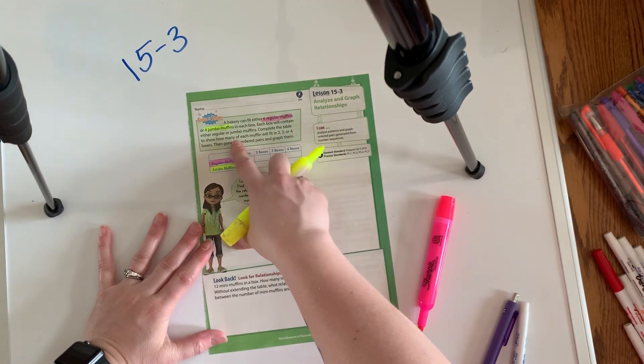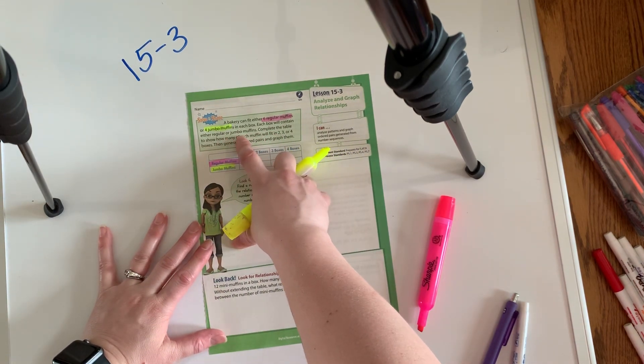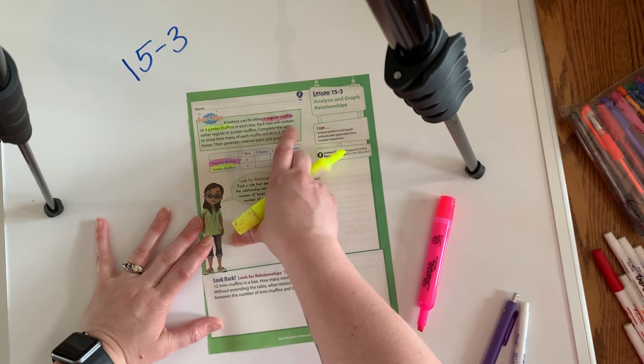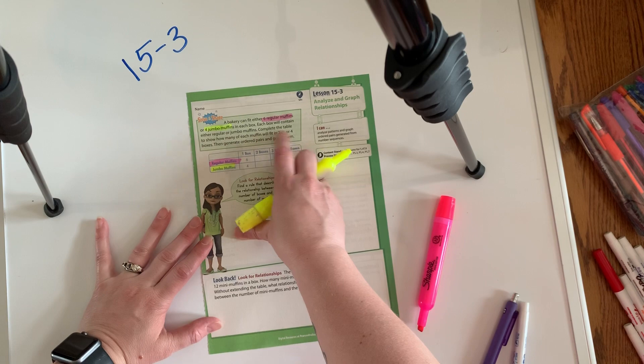Each box will contain either regular or jumbo muffins. So either you're getting regular or you're getting jumbo. There's no mixing them up. That's what that means. Complete the table and show how many will fit in two, three, or four boxes.